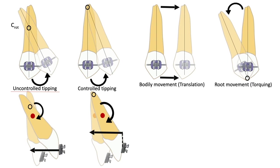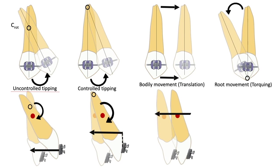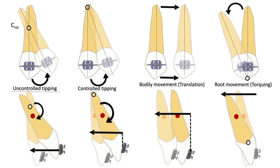The red dots represent the center of resistance, and the orange dots are the center of resistance of the orthodontically moved tooth. To alter the force system in controlled tipping, a power arm is added below the center of resistance of the tooth. In translation, the force is now being applied through the center of resistance by increasing the length of the power arm. In root movement there is minimal crown movement, so the power arm extends beyond the center of resistance. The moment of force increases or decreases with an increase or decrease in the distance of force application from the center of resistance.